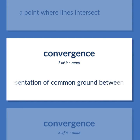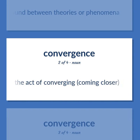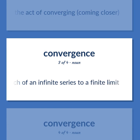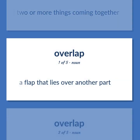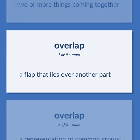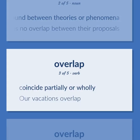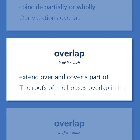Overlap. A representation of common ground between theories or phenomena. The act of converging, coming closer. The approach of an infinite series to a finite limit. The occurrence of two or more things coming together. A flap that lies over another part. There was no overlap between their proposals. Coincide partially or wholly. Our vacations overlap. Extend over and cover a part of. The roofs of the houses overlap in this crowded city. The property of partial coincidence in time.